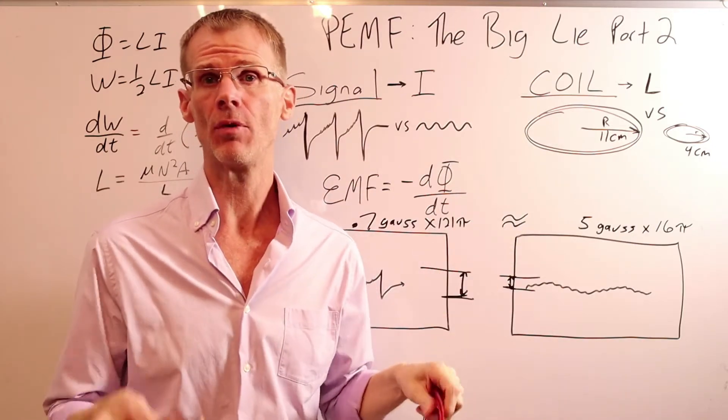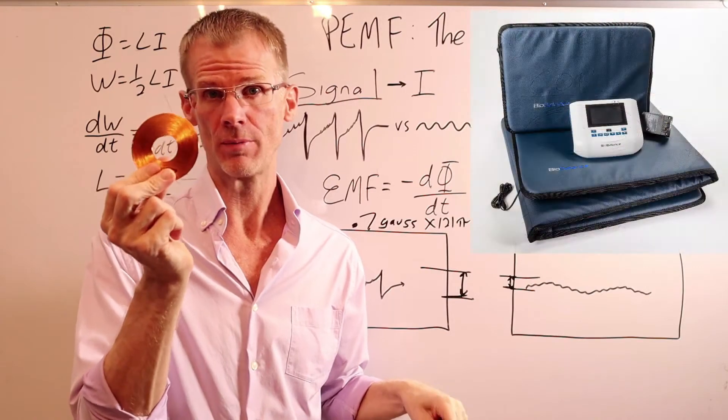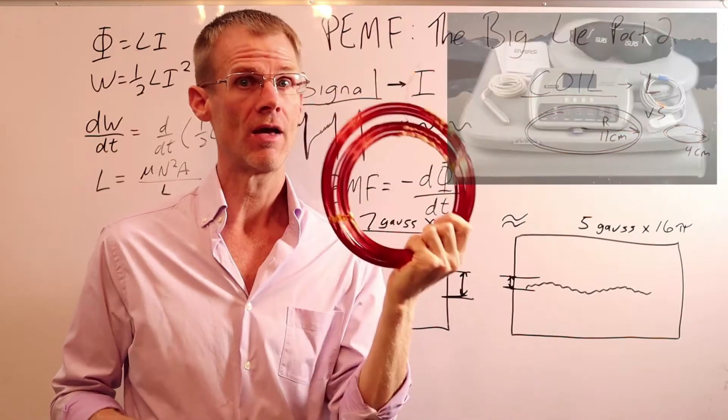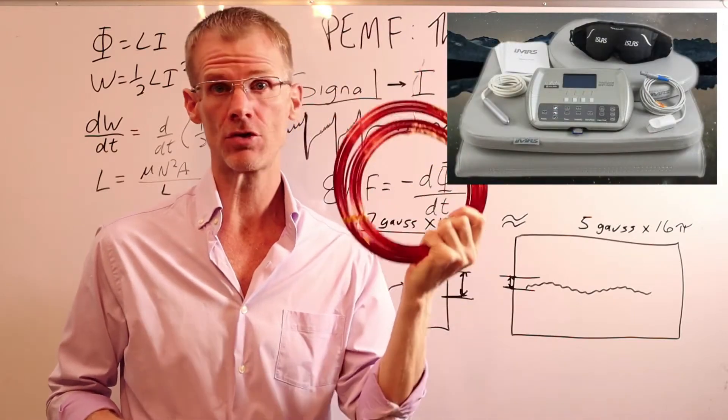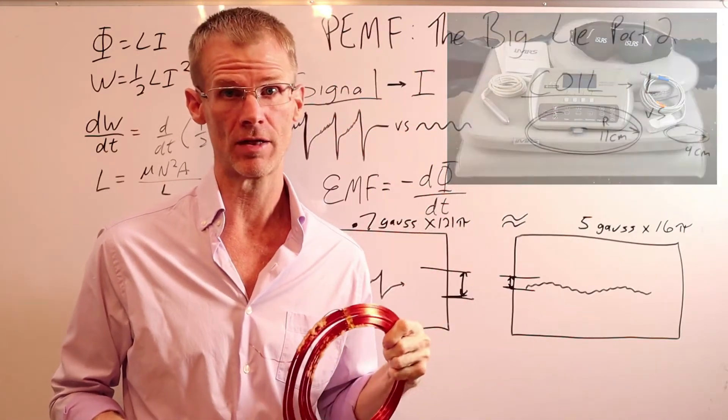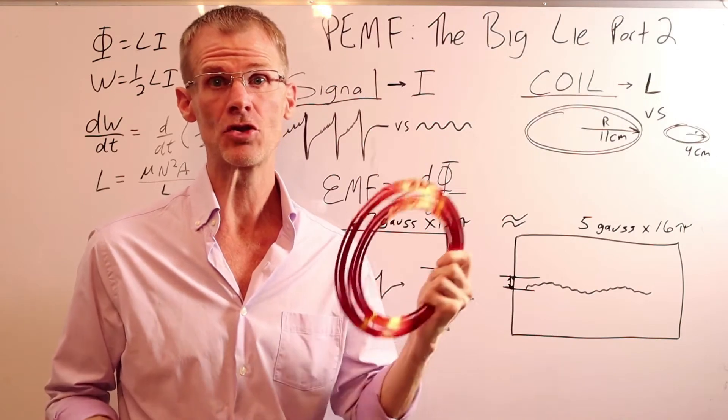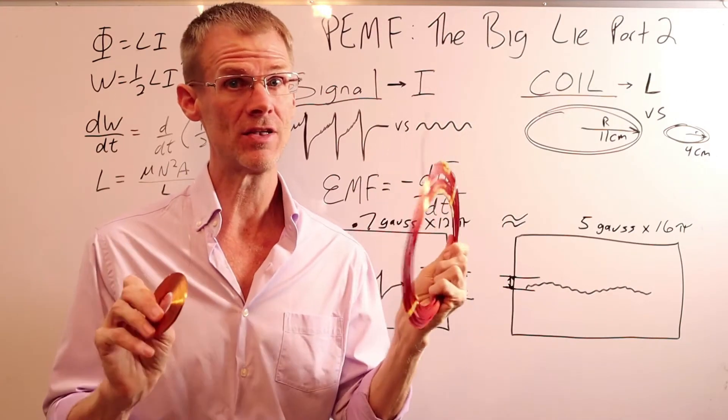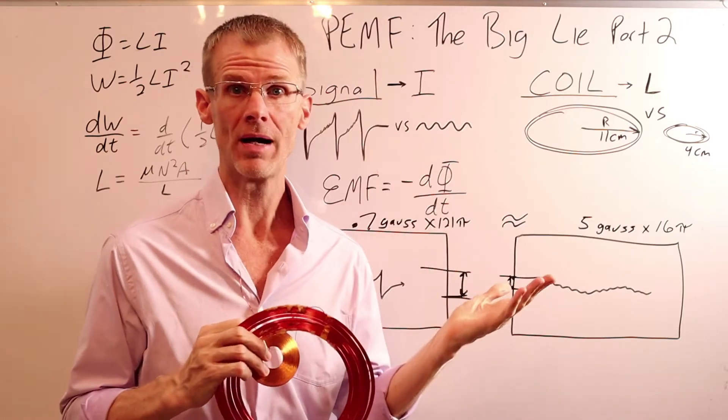So as an example, we're going to look at the BioBalance PEMF device, which is 5 gauss on the highest setting, versus the IMRS 2000 PEMF, which goes up to 0.7 gauss on the full body mat. And like I said, I'm going to show you that the IMRS is more powerful than the BioBalance. And this is physics. So how is that possible?